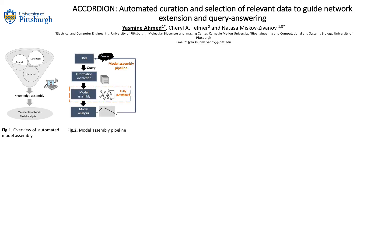Here's a typical model assembly pipeline that starts with a question raised by the user about the system under study. This question can be transformed into a query to be used as input to search engines in order to select the most relevant papers and extract information that can be assembled into models. These models are then analyzed using model analysis techniques such as stochastic simulations and statistical model checking. The automation challenges include machine reading issues, literature inconsistency, and model validation difficulties in providing precise and quick answers to the user's question.